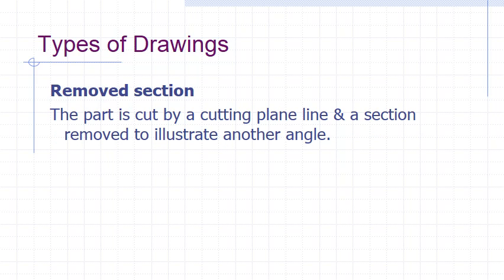A removed section shows a view of an object as it would appear straight on if it were cut away at that point.